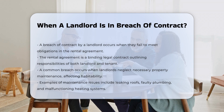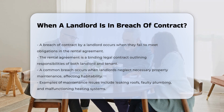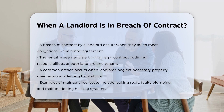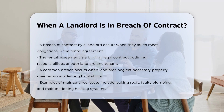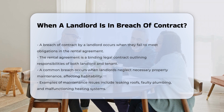Failure to maintain the property: one common way a landlord can breach the contract is by failing to maintain the rental property. This includes neglecting necessary repairs, ignoring safety hazards, or not addressing issues that affect the habitability of the premises. Examples include leaking roofs, faulty plumbing, or malfunctioning heating systems.